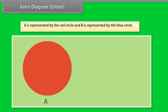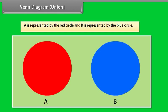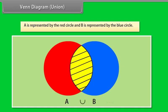Venn diagram union. A is represented by the red circle, and B is represented by the blue circle. The union consists of all points which are colored red or blue or yellow.